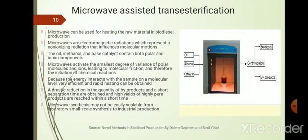Microwave assisted processes are used in pyrolysis and other thermochemical conversions as well, but scalability is always the problem. Microwave heating can only be used at laboratory scale; for industrial production it is not advisable because of cost and practicality concerns. This is the main drawback of microwave assisted transesterification.